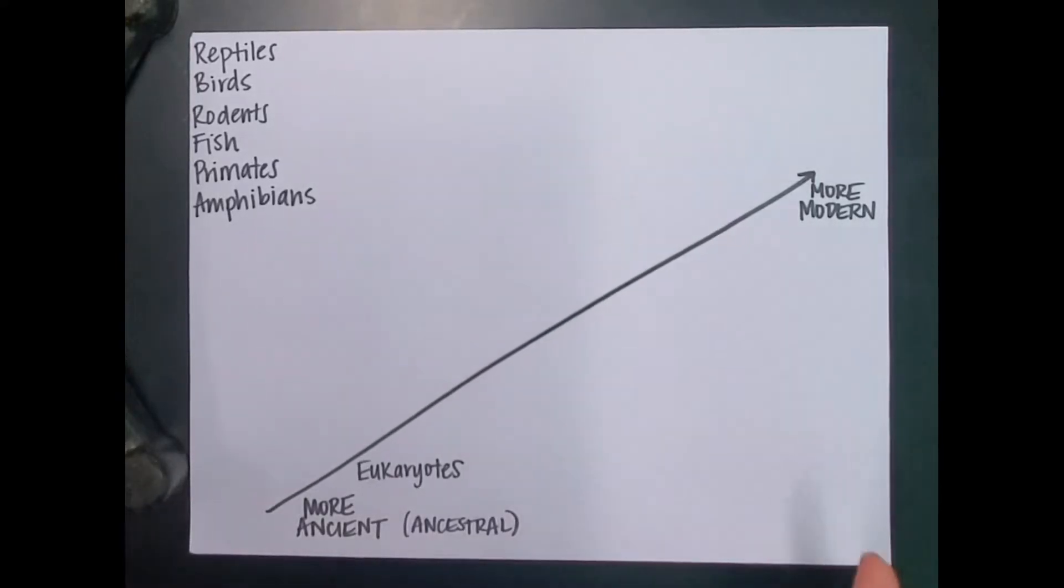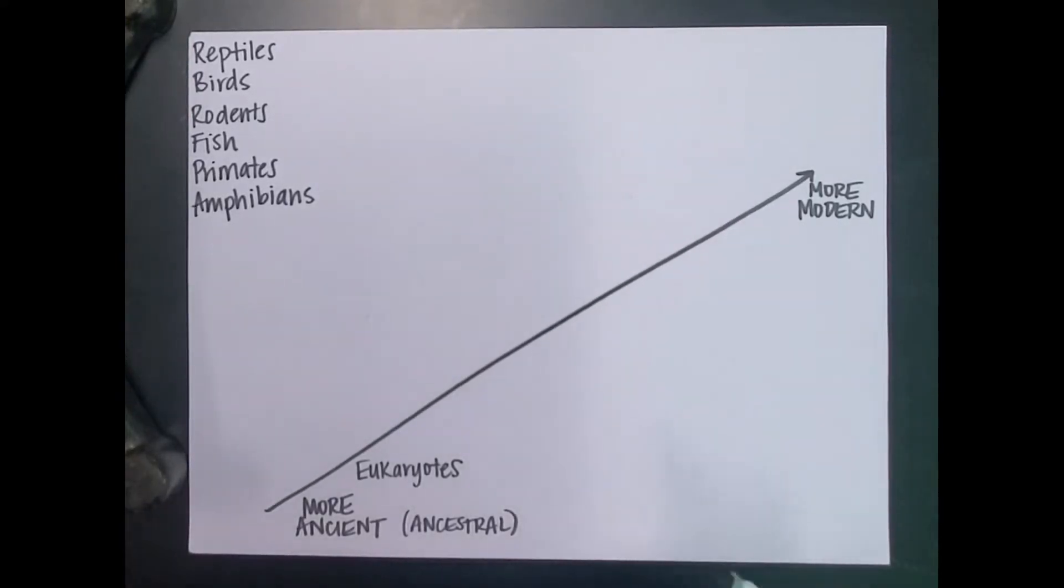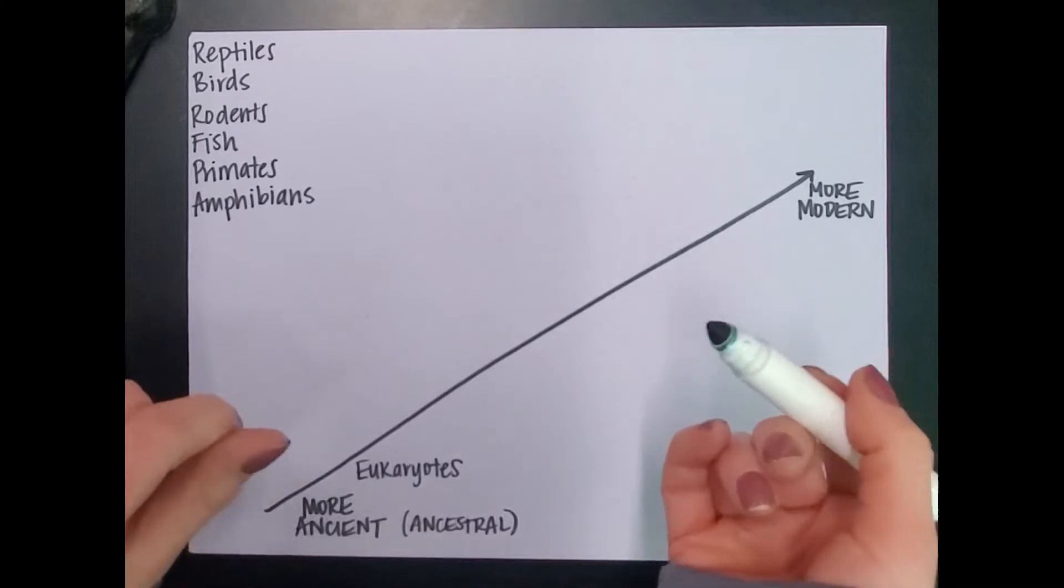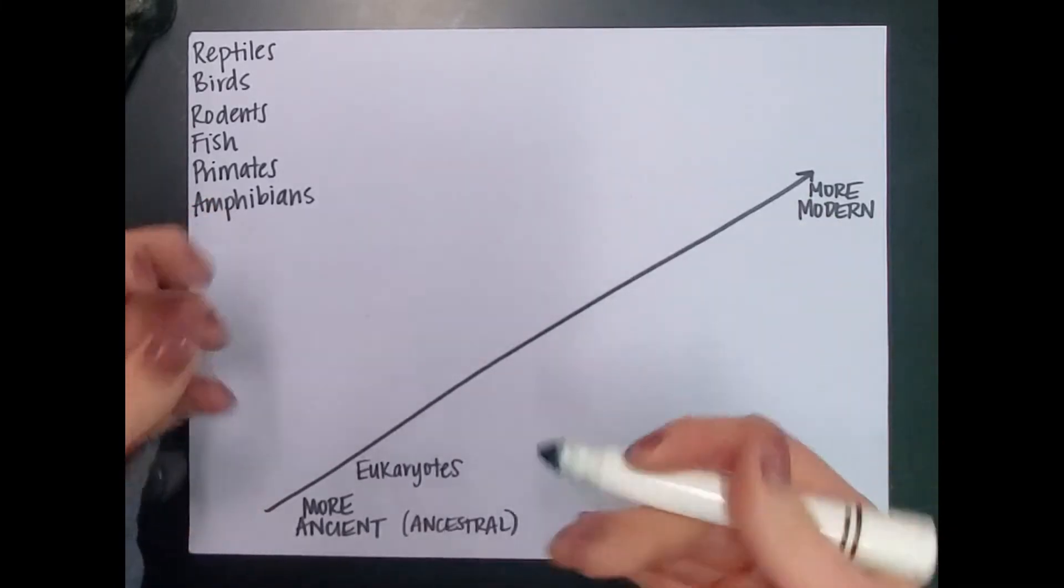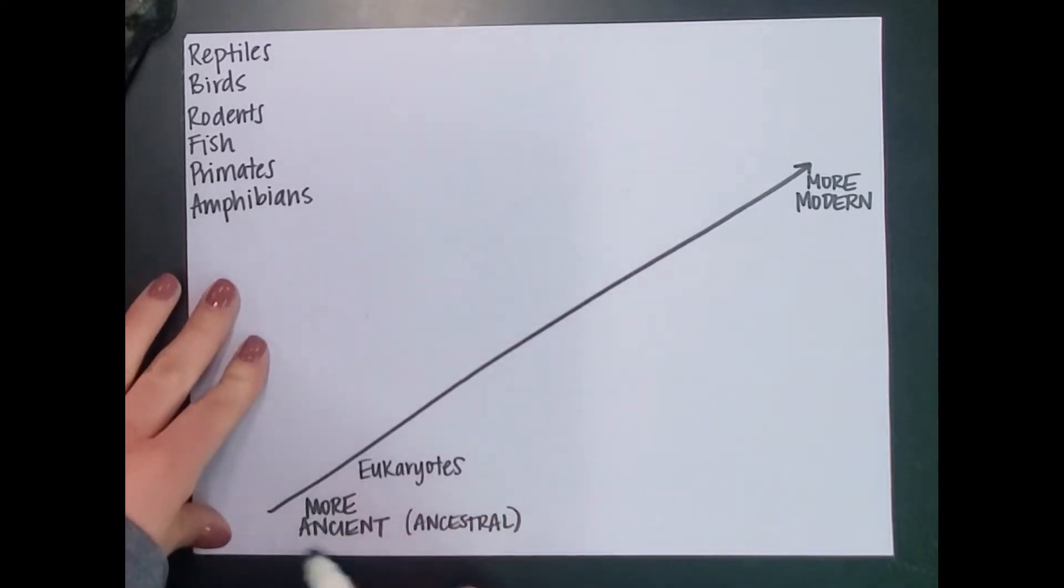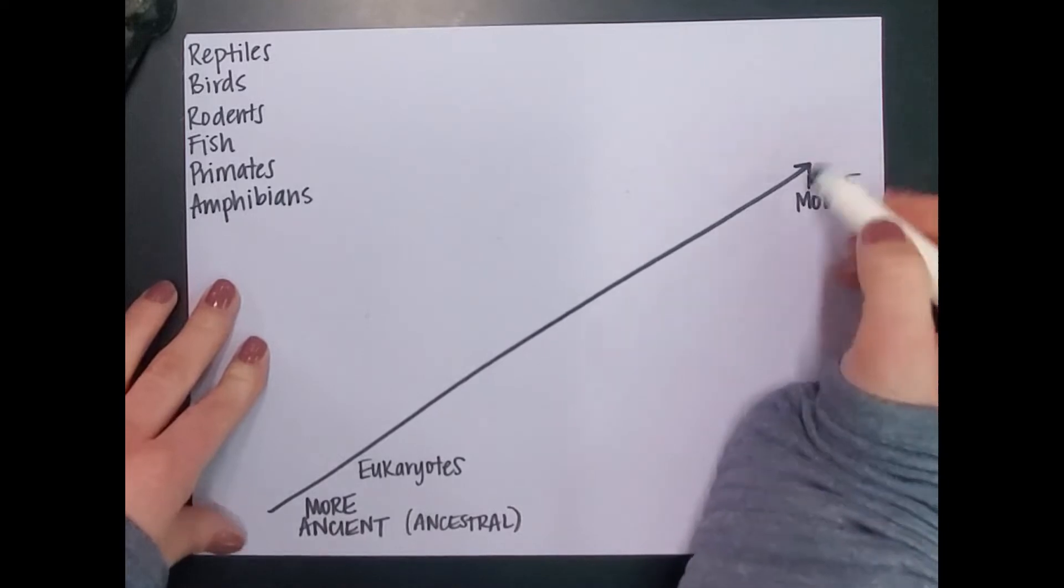So you've noticed that we're talking about cladograms today. These are graphic organizers that we construct in order to see similarities and differences between organisms, species, groups of organisms, and so on. I set it up like a timeline, with my more ancient species towards the bottom and more modern species towards the top.